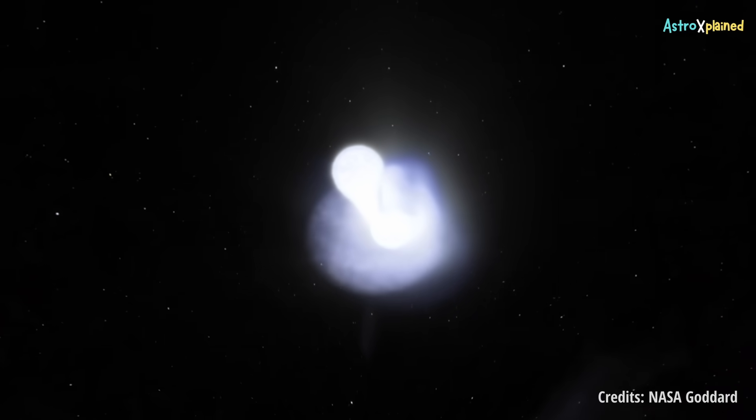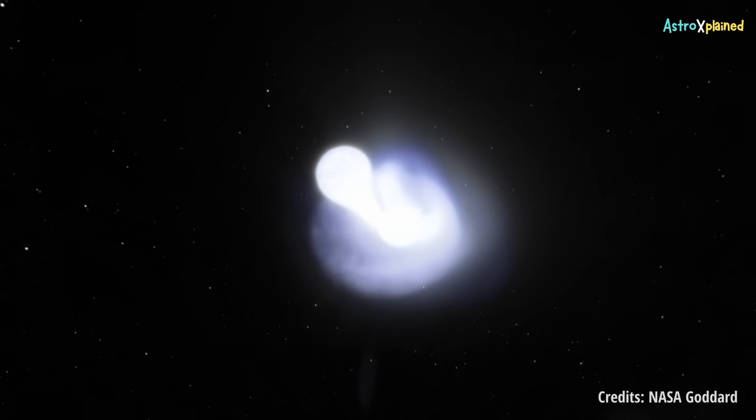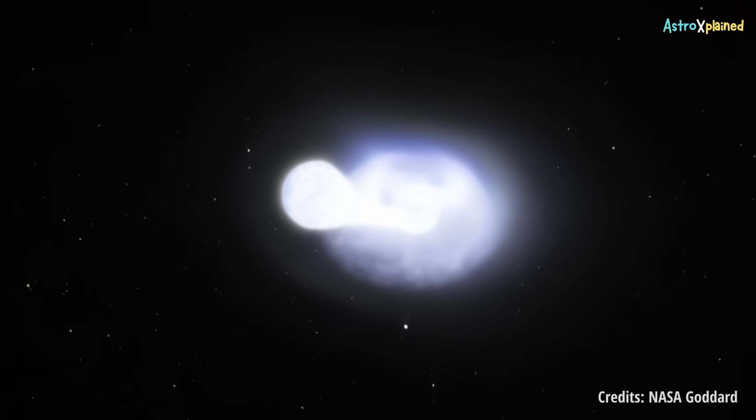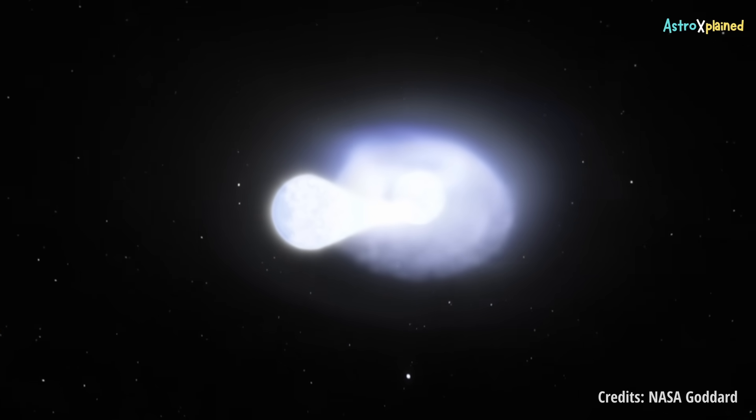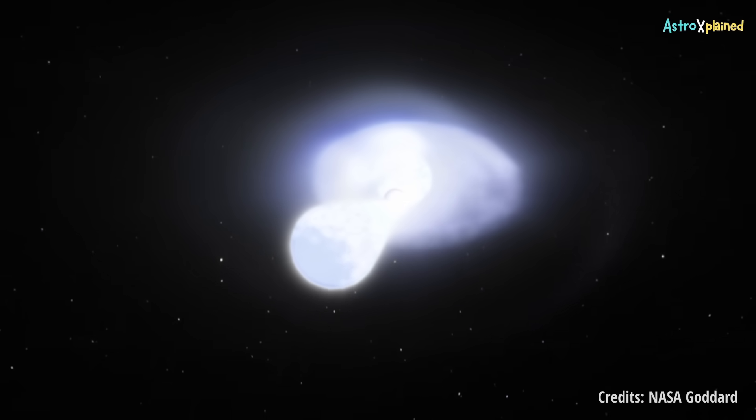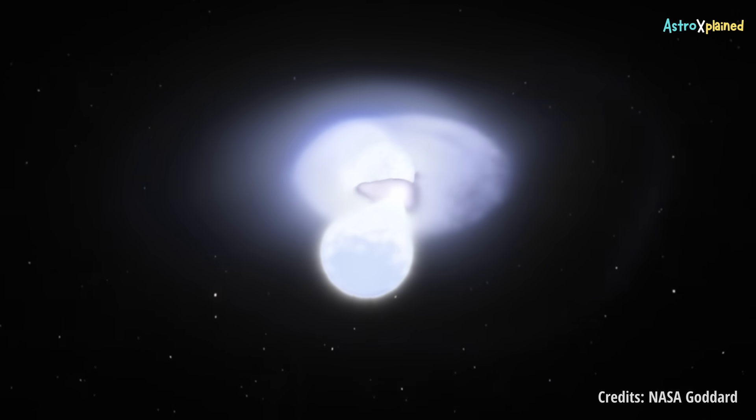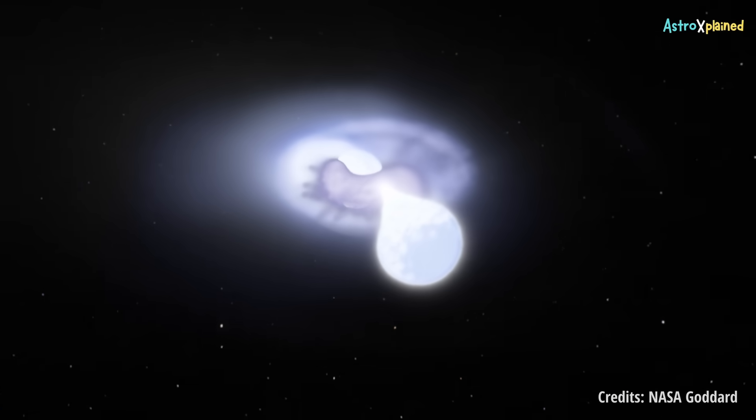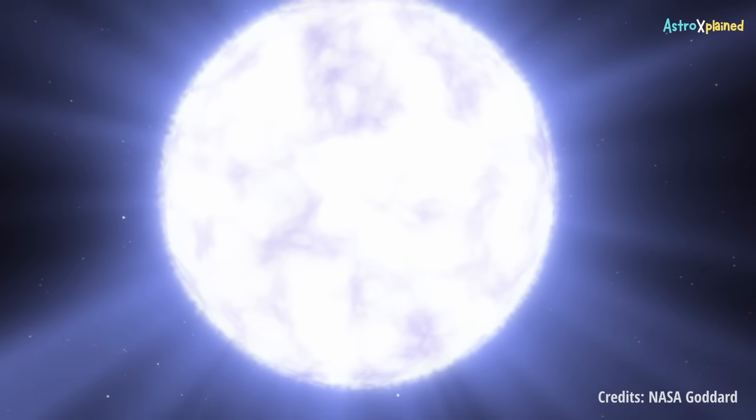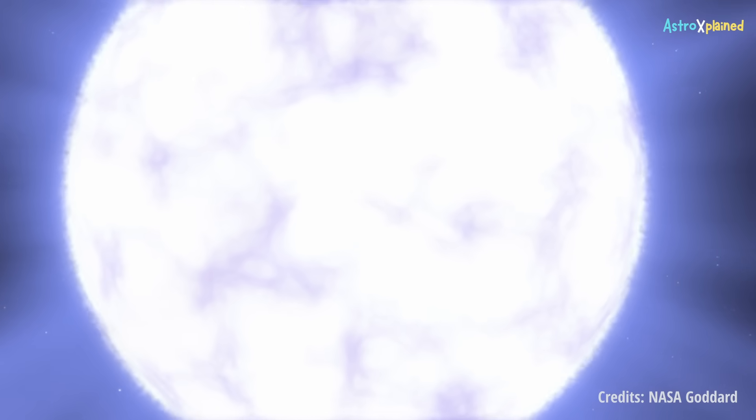In other cases, scientists think two white dwarf stars may form the binary. Either the stars finally merging together triggers the supernova, or it happens as they spiral in closer and closer, while the more massive of the two pulls material off its companion in the final few minutes. Before they merge, it reaches the same mass tipping point and goes supernova, always releasing a similar amount of energy.